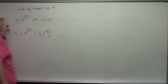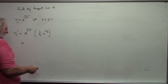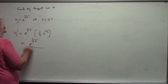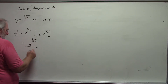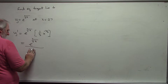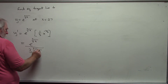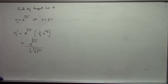So this becomes e to the cube root of x over three times the cube root of x squared. Note that x to the negative two-thirds is the cube root of x squared in the denominator.